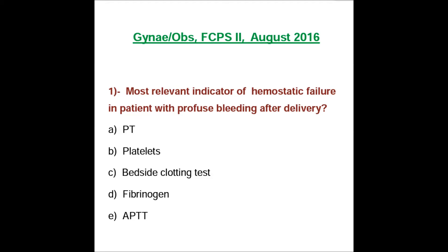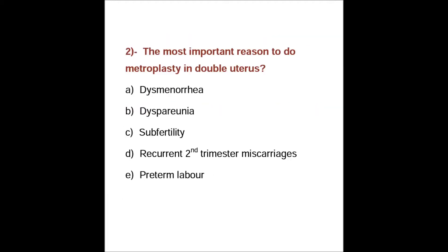Question number two: the most important reason to do metroplasty in double uterus. The answer is recurrent second trimester miscarriages. The diagnostic test for uterine anomaly is hysterosalpingography, and its treatment is metroplasty. Its complication is second trimester miscarriages — when the baby is growing, there is not enough room for the growth.